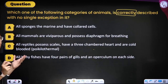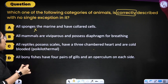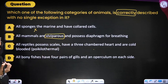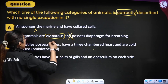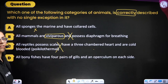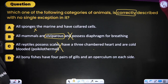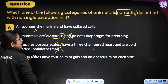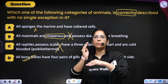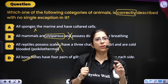Option: all sponges are marine and have collared cells — No, all sponges do not have collared cells, incorrect. All mammals are viviparous — No, we have the well-known example of the duck-billed platypus. All reptiles have three-chambered hearts — No, crocodile has a four-chambered heart. All bony fishes have four pairs of gills and an operculum on each side — Yes, this is 100% right. Bony fishes (Osteichthyes) have gill slits covered with operculum, which is absent in cartilaginous fishes.